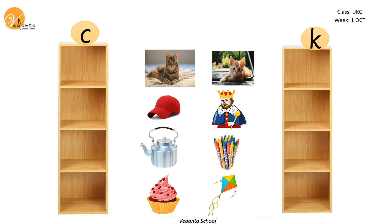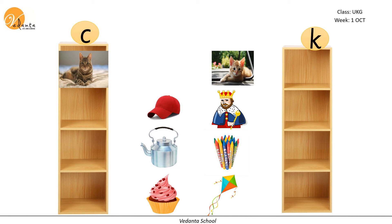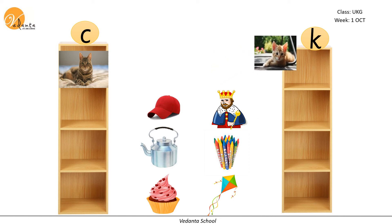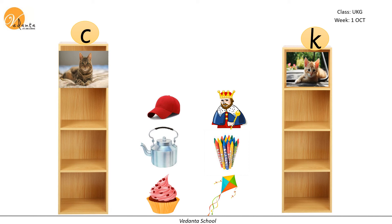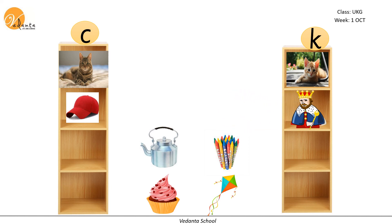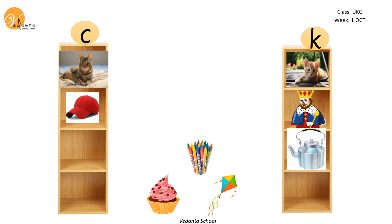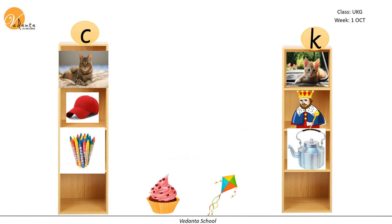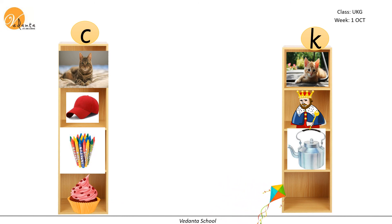Cat has to go in the C rack. Wonderful. The next picture is kitten — kitten has to go in the K rack. Cap has to go in the C rack. King has to go in the K rack. Kettle — where does kettle have to go? Kettle has to go in the K rack. Crayons has to go in the C rack. Cupcake has to go in the C rack. And kite has to go in the K rack.